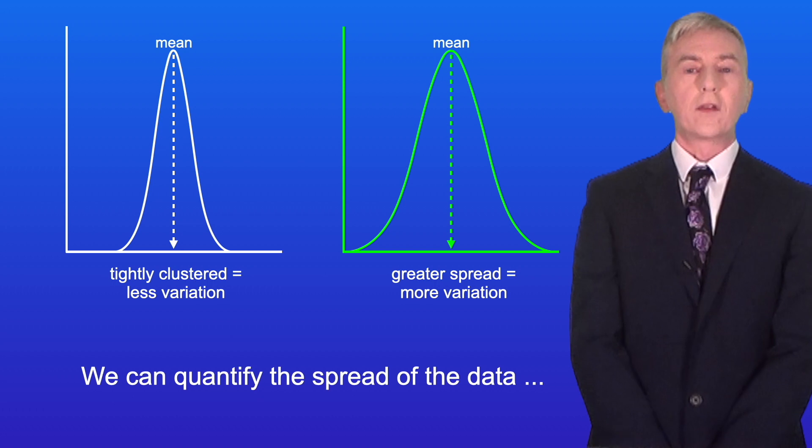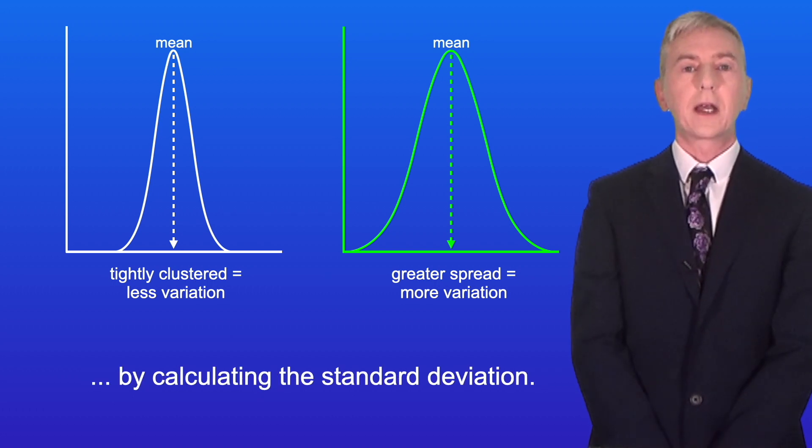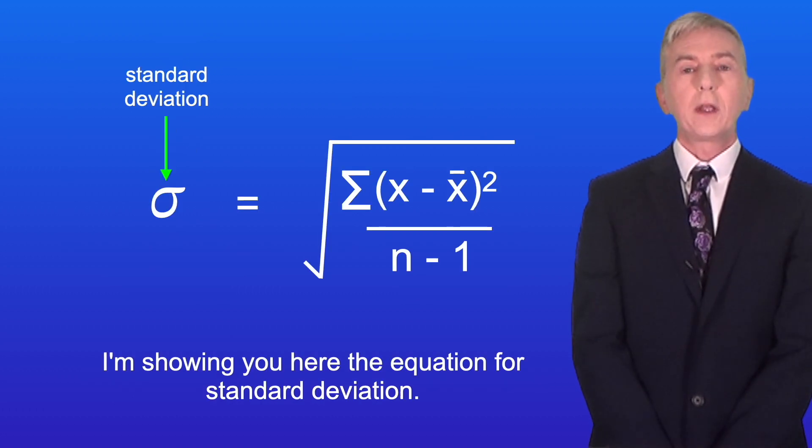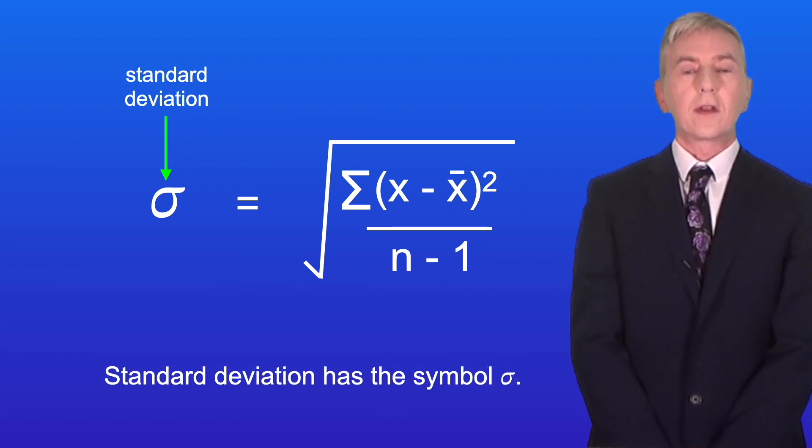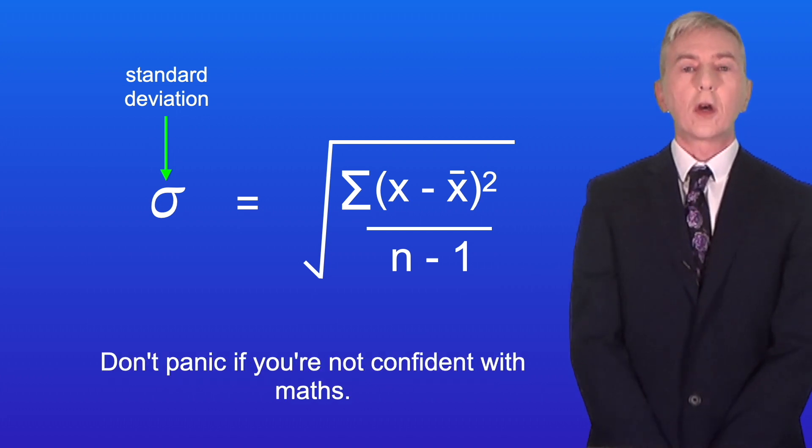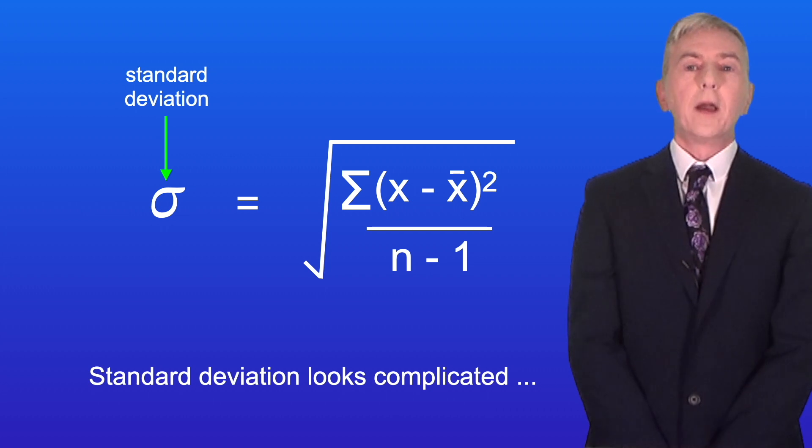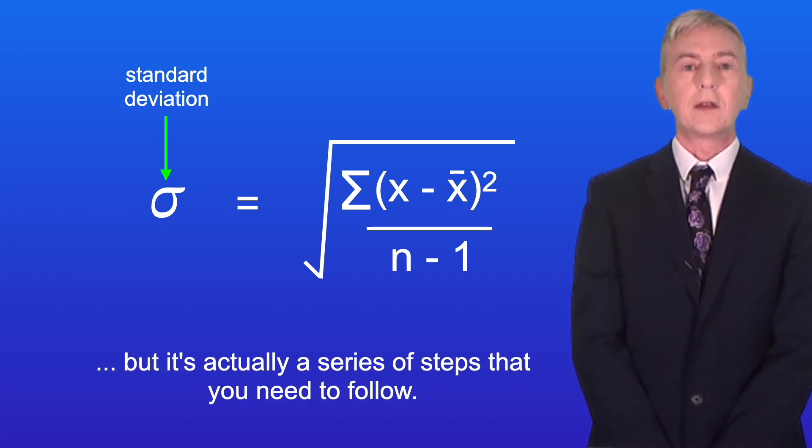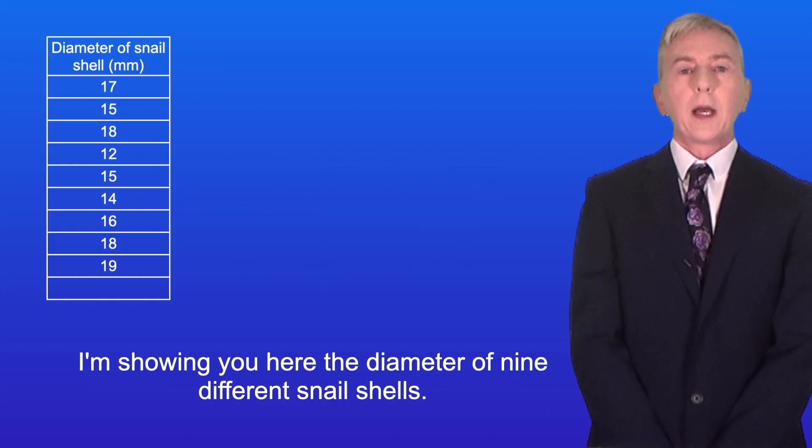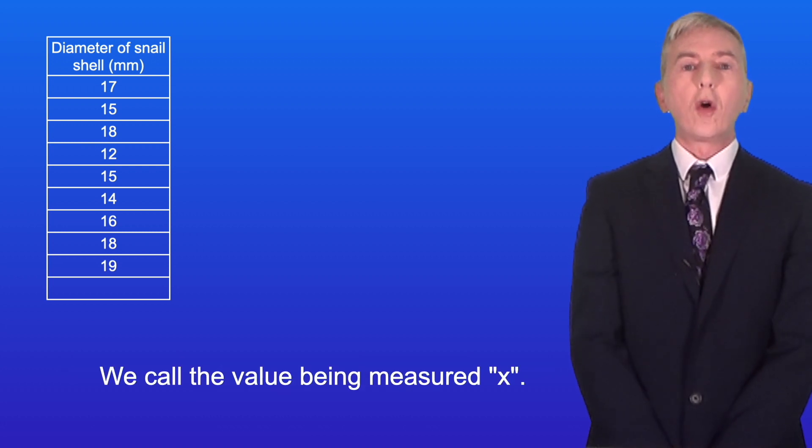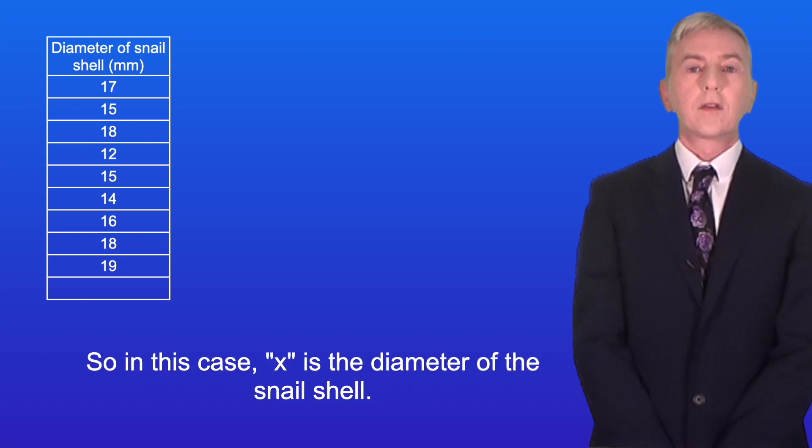Now we can quantify the spread of the data by calculating the standard deviation. I'm showing you here the equation for standard deviation. Standard deviation has the symbol lower case sigma. Don't panic if you're not confident with maths. Standard deviation looks complicated, but it's actually a series of steps that you need to follow. I'm showing you here the diameter of nine different snail shells. We call the value being measured x, so in this case x is the diameter of the snail shell.